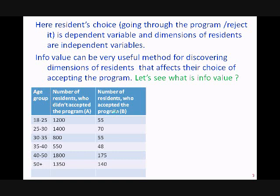Among the 18 to 25 age group, there were 1,200 people who knew about the offer but didn't accept it, and 55 people who knew about the offer and accepted it. Similarly, in the 25 to 30 age group, there were 1,417 residents — 1,400 didn't accept the offer and 17 accepted it. We will now do this in Excel so we can understand the whole calculation.